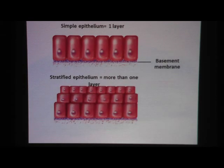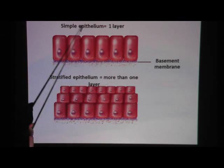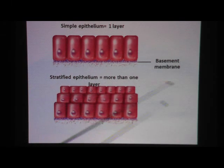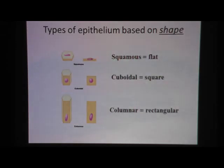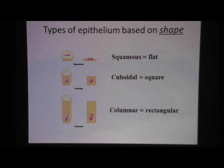For example, if it is only one cell layer thick, then we call it simple epithelium. If it is more than one cell layer thick, then we call it stratified epithelium. The second part of the name is based on the shape of the cell. If the cell is squished — "Sq" for squished, "Sq" for squamous — then we call it squamous epithelium.